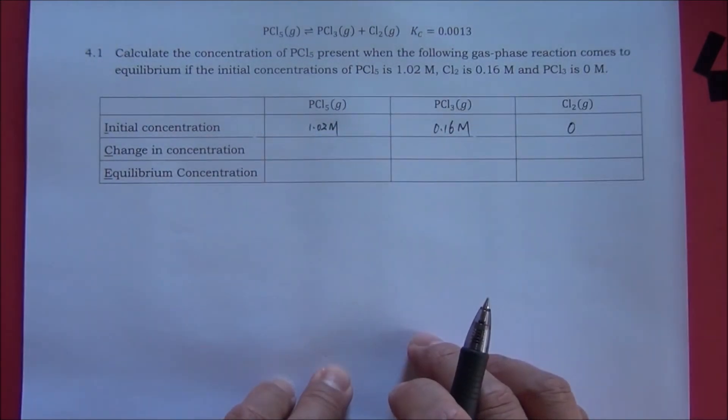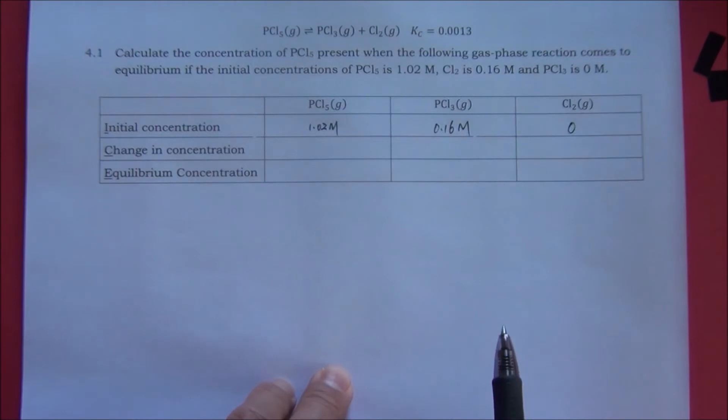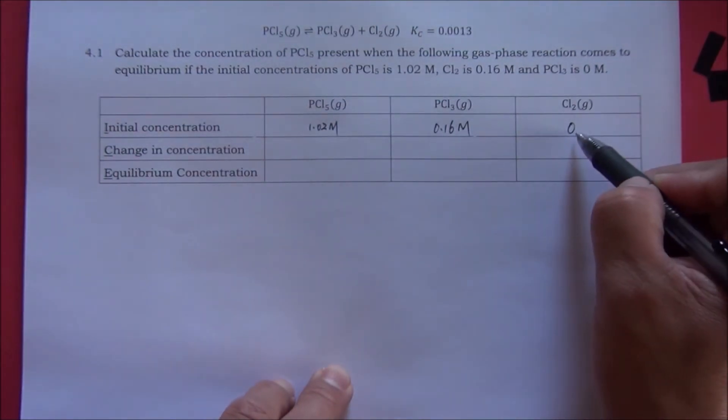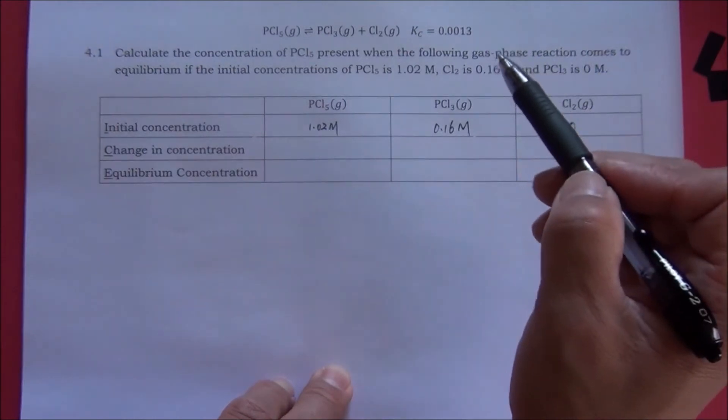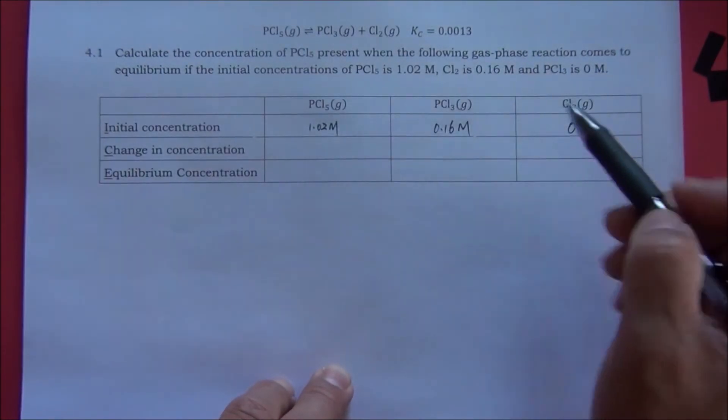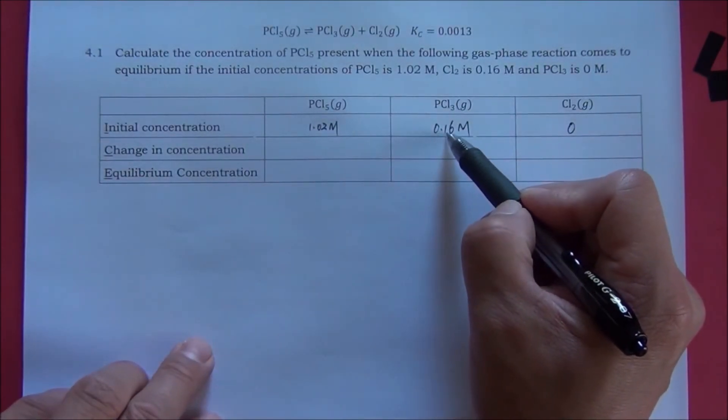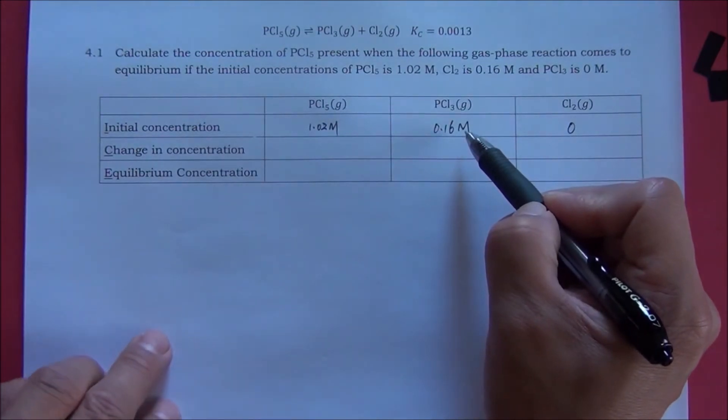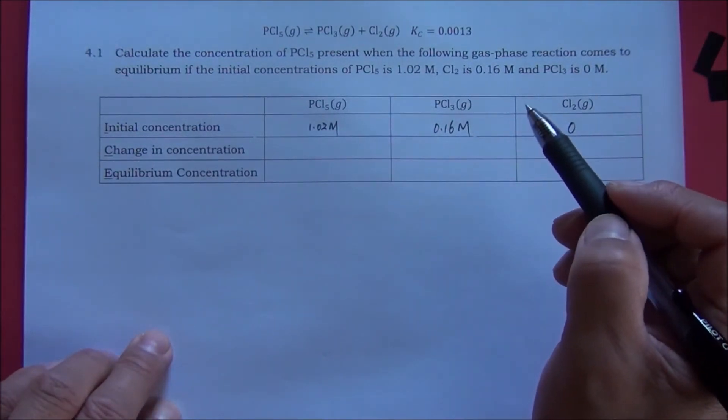Next, we need to figure out the change in concentration of the reactant and the products. The initial concentration of one of the product is 0, and the other product is 0.16. Next, we can calculate the reaction quotient.